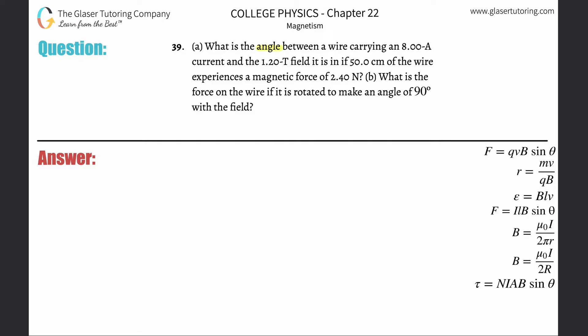Number 39, what is the angle between a wire carrying an 8 amp current and the 1.2 Tesla field it is in if 50 centimeters of the wire experiences a magnetic force of 2.4 newtons?